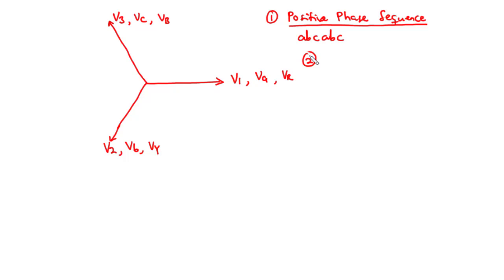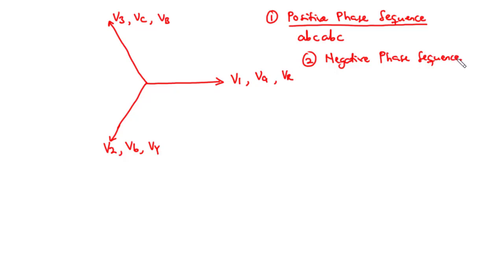If the rotation is reversed — that is, we have rotation in the anticlockwise direction — then we have what we call the negative phase sequence. With that, we are going to have A, C, B, A, C, B.